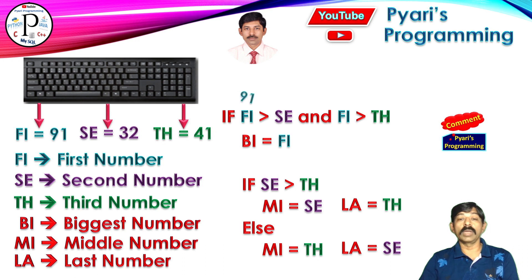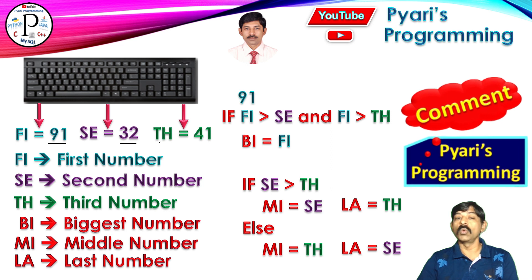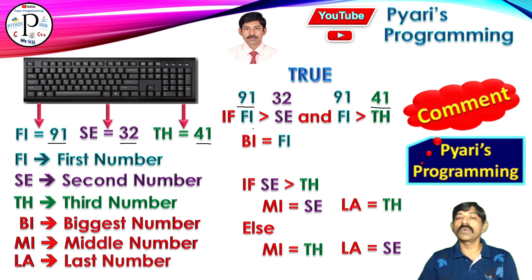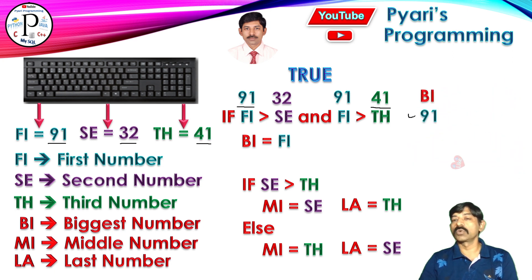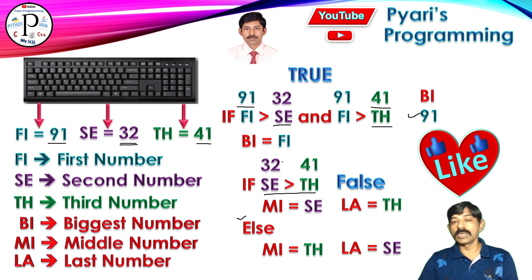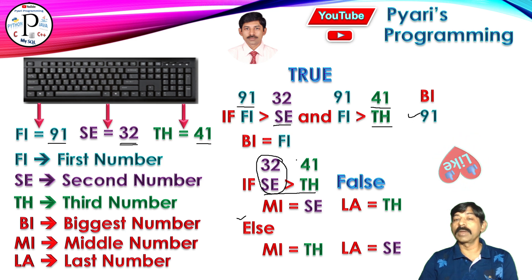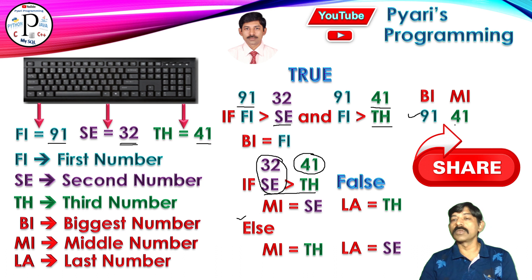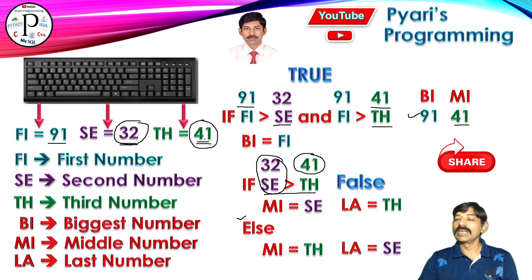Let's check one more example. This time the user has inputted: first number 91, second number 32, and third number 41. 91 is greater than 32 — true. 91 is greater than 41 — both conditions are true, so the first one is the biggest: 91. Now checking second and third for the second biggest: 32 greater than 41 — this is false, so I execute the else part. The third number is the second biggest, so the middle number is 41. You can check the color — green is available for this one. The second number, 32, becomes the last.